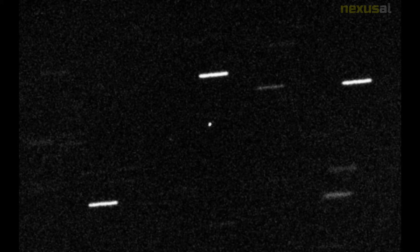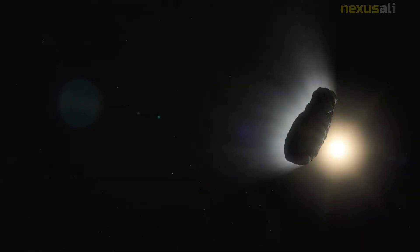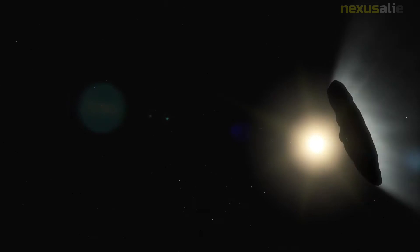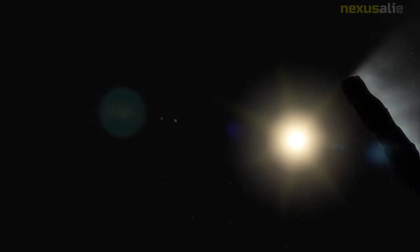Despite its close approach to the sun, Oumuamua showed no signs of having a coma. It has exhibited non-gravitational acceleration, potentially due to outgassing or a push from solar radiation pressure. The object could be a remnant of a disintegrated rogue comet, according to astronomer Zdenek Sekanina.